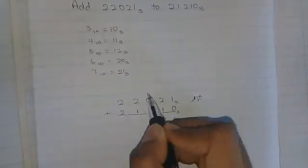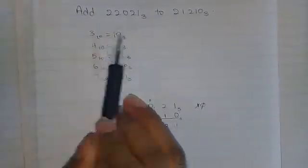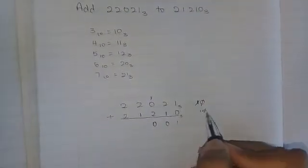So, now 2 plus 1 is equal to 3. 3 base 10 is equal to 10 base 3. So, we put out 10 here again, take the 0, put it in there, take the 1, put it over here.